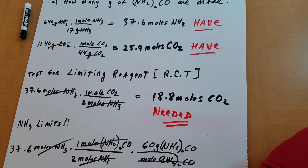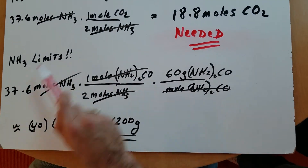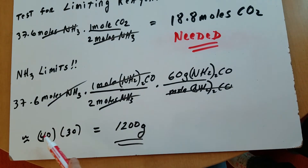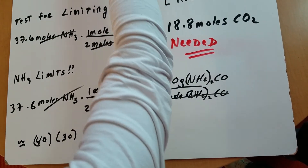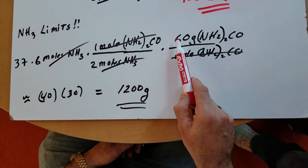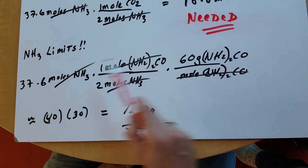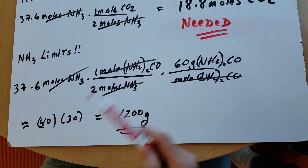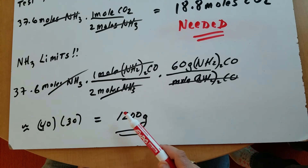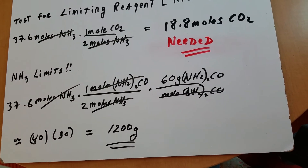Once we have the limiting reagent, it's downhill from here. Start the calculation with the moles of the limiting reagent: 37.6 moles of ammonia. Apply the mole ratio — one mole of urea for every two moles of ammonia — moles of ammonia cancel. Look up the weight of urea: 60 grams per mole. So it's 37.6 times 60 divided by 2. Rounding: 40 times 30 is about 1,200 grams. Since I rounded up, the answer is a little under 1,200 — around 1,100 and change.